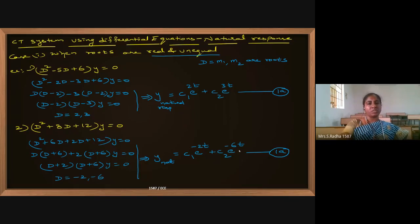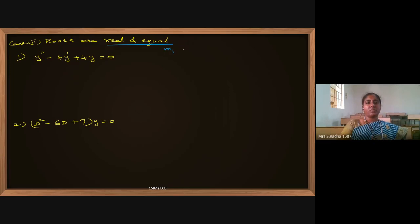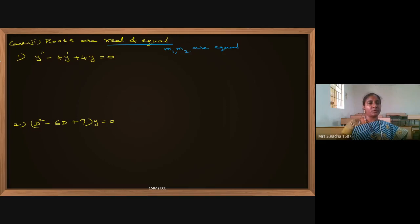This is Case 1 when roots are real and unequal. Now coming to Case 2: when roots are real and equal. Let the roots be m1 and m2. For example they could be 2,2 or 5,5 or −3,−3 — they are real values with no complex or imaginary part, but they are equal.